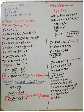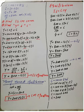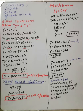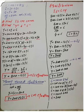To derive the IS curve, we write Y equals C plus I plus G. We substitute the value of C, which is 100 plus 0.8 YD, the value of investment, which is 50 minus 25r, and the value of G, which is 50. Since disposable income YD equals Y minus T, we substitute that in as well.